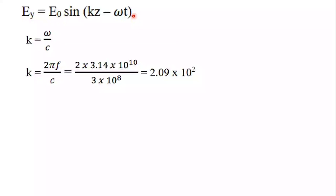To find k, we use k = ω/c = 2πf/c. Plugging in all the values into this equation, we get k = 2.09 × 10².